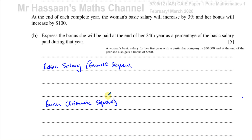The question asks for the bonus paid at the end of the 24th year as a percentage of the basic salary in that year. For the geometric salary series, we use the formula for a particular term: A × R^(n−1). Her initial salary is $30,000 and R = 1.03 (since 100% + 3% = 103% = 1.03). So the 24th year salary is 30,000 × 1.03^23.